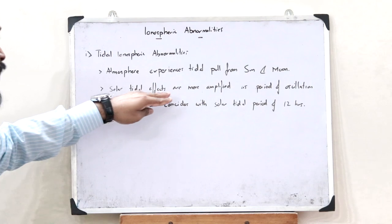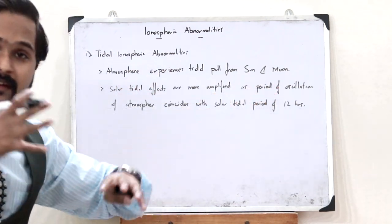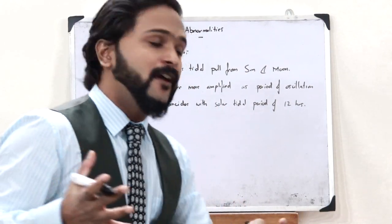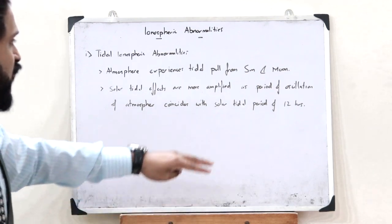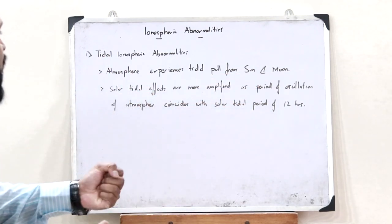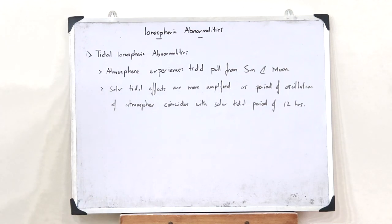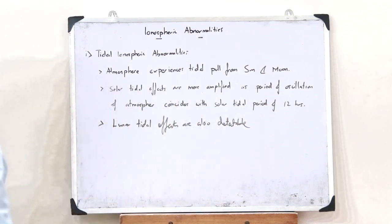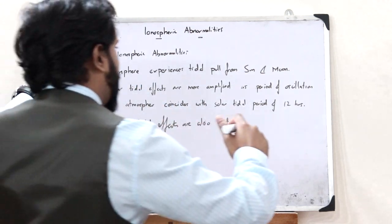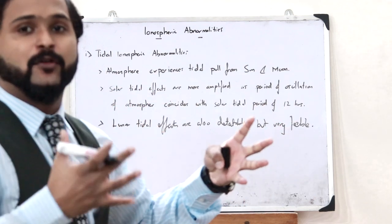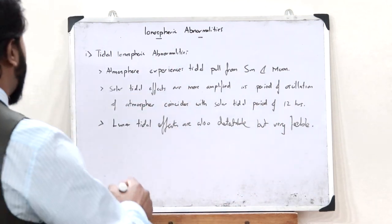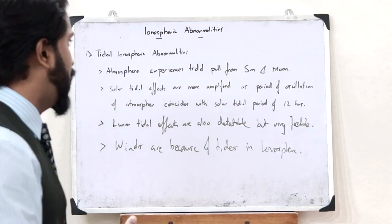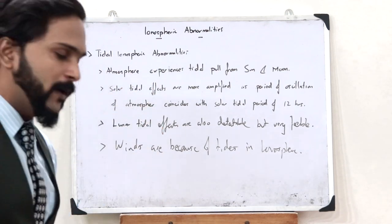The solar tidal effects are more amplified because the period of oscillation of the atmosphere coincides with the solar period, which is 12 hours. Therefore, the solar tidal period coincides with the period of oscillation of the atmosphere and causes ionospheric abnormalities. The lunar tidal effects are also detectable but they are very feeble, not as strong as the solar tidal effects. The winds in the ionosphere are mainly caused due to these tidal effects.